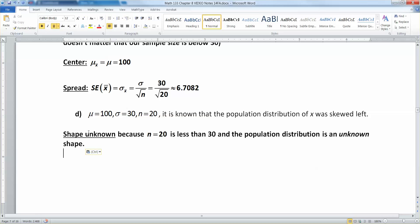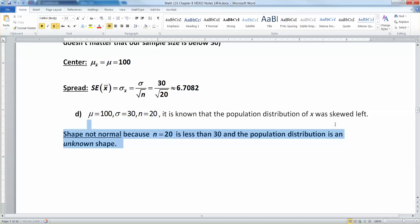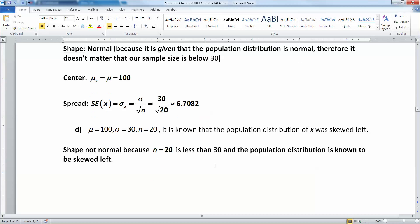The shape is unknown. Actually, the shape is probably skewed left. Let me put it this way: it's not normal because n equals 20 is less than 30, and the population distribution is known to be skewed left. We don't have any guarantees of being normally distributed because our sample size is too small.